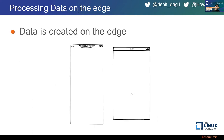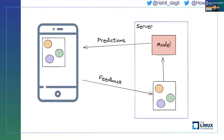A lot of data is created on the edge — take your standard smartphones, for example. A lot of the data you might want to train your machine learning model with is actually created on the edge. Traditionally, machine learning systems have an edge device with data and a central model on the server. The model runs on the server, sends predictions to your mobile device, the mobile device sends feedback, and the server retrains the model.